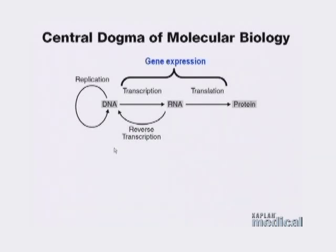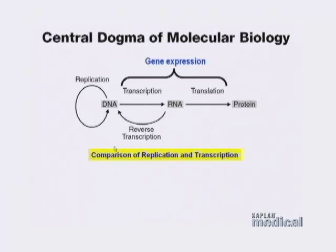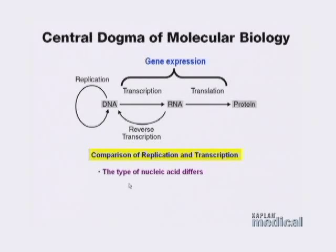Let's start out by comparing DNA and RNA. We're going to compare the mechanisms of replication — where DNA is going to make more copies of itself — with the process of transcription, which is the initial process in gene expression where you're making RNA information for protein synthesis. First of all, the types of nucleic acids between these two processes are going to differ. For DNA, we're talking about synthesizing deoxyribonucleic acid, whereas for RNA synthesis we're talking about synthesizing ribonucleic acid. Very similar in structure, but there are a couple of differences we'll take a look at.